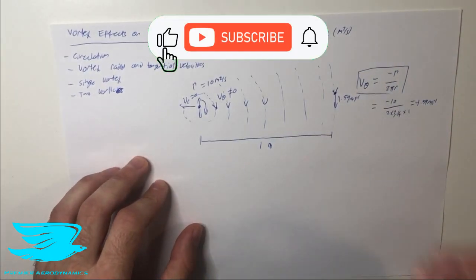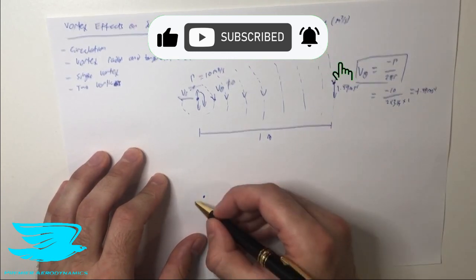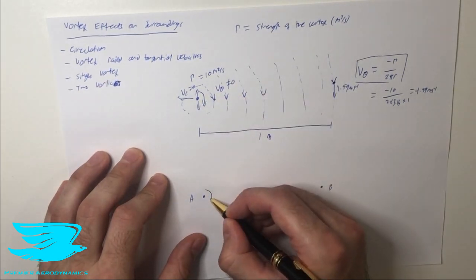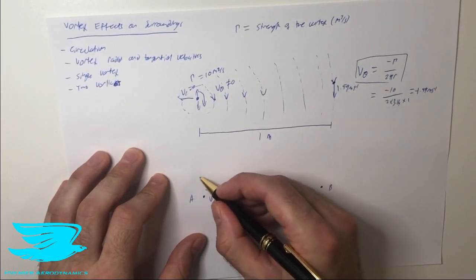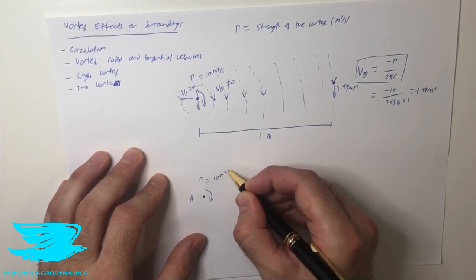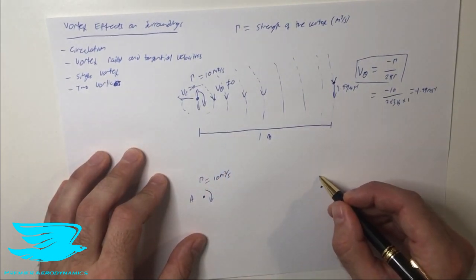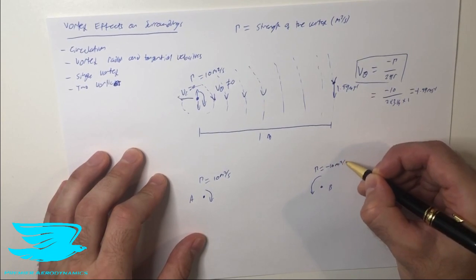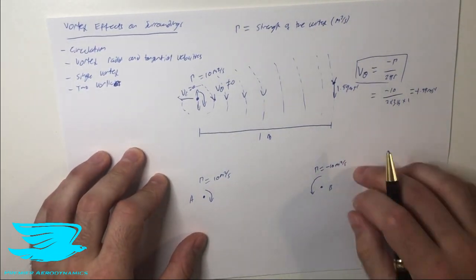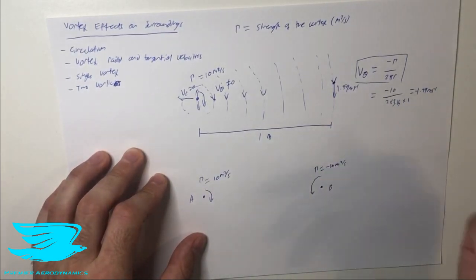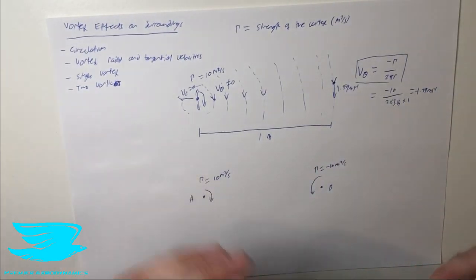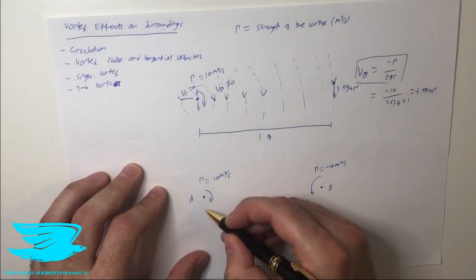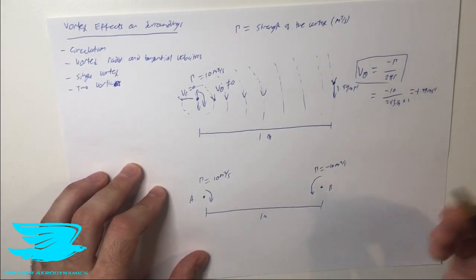That's one vortex. What if we have two vortices? Let's say we have vortex A and vortex B. Vortex A is the same as before — rotating clockwise with a circulation of 10 meters squared per second. Vortex B rotates in the opposite, counterclockwise sense, so its circulation is minus 10 meters squared per second — negative because it's counterclockwise, positive being clockwise. I'll say these two vortices are separated by one meter.